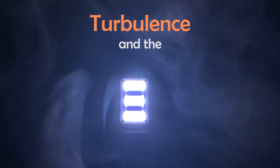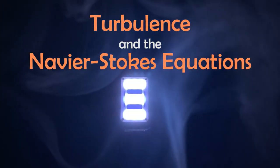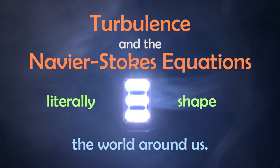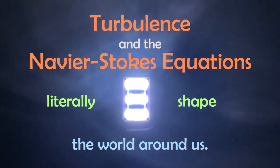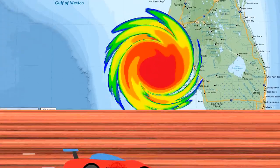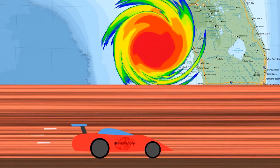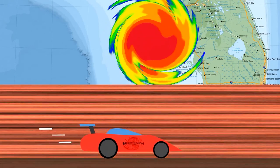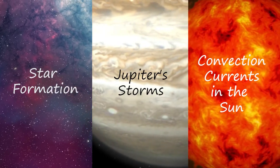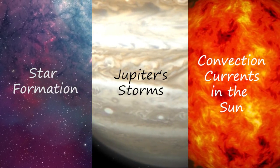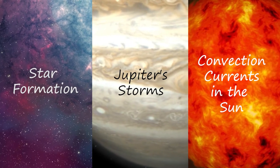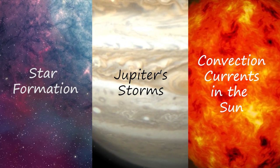Fluid dynamics is mysterious and full of surprises. Turbulence and the Navier-Stokes equations literally shaped the world around us. With more understanding, we will be able to more accurately predict weather, build more efficient cars and planes, and even unlock many secrets in the universe such as star formation, Jupiter's storms, and convection currents in the sun.